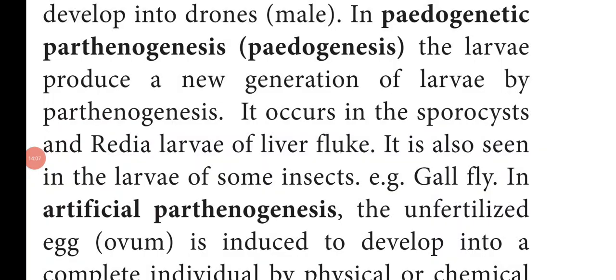Next, we will see Paedogenetic Parthenogenesis, otherwise called Paedogenesis. Here the larvae produce a new generation of larvae by Parthenogenesis. It occurs in the Sporocyst and Rediae larvae of Liver Fluke, which is a parasite that lives in the intestine. It is also seen in the larvae of some insects, for example, Gallfly.